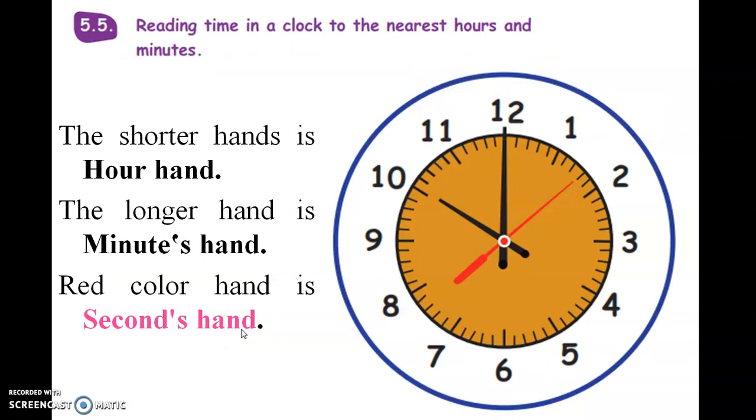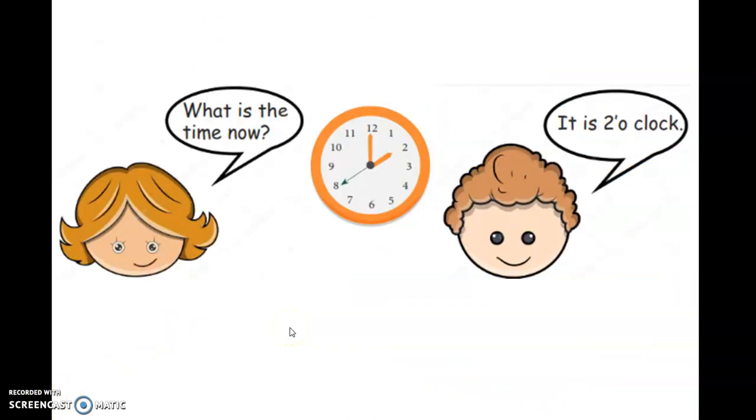Friends, now let us see reading time in a clock to the nearest hours and minutes. Friends, do you know the short hand? The shorter hand is the hour hand. Do you know the longer hand? The longer hand is the minute hand. Do you know the red color hand? The red color hand is the second hand.